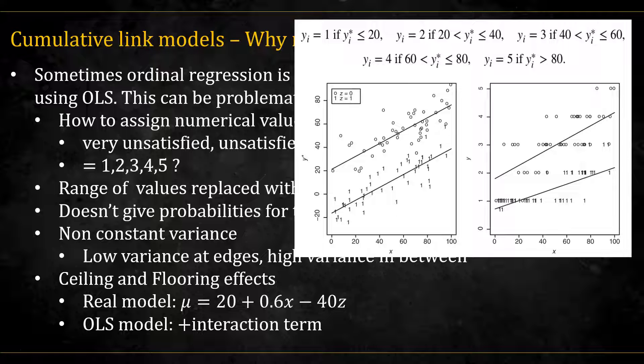Here you can see an example from Agresti's book. On the left, you see the latent variable model for the two different values of a binary variable z. On the right, you can see an OLS fitted to the actual y's. Even though the real model is given here, the OLS fit shows that there might be an interaction involved between x and z, given by the fact that the two lines have different slopes. Which is, of course, not true. Notice also that the variance around x equals 0 is quite low, but the variance in the middle for x equals 50 is quite high.